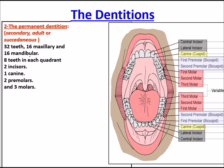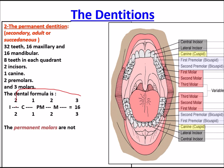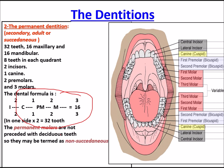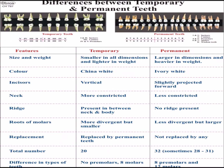Permanent or adult dentition contains 32 teeth — 16 maxillary and 16 mandibular — with the formula 2-1-2-3. Permanent molars are not preceded by any deciduous teeth, so they are termed non-succedaneous teeth. Differences between temporary and permanent teeth: temporary teeth are smaller in dimension and lighter in weight; temporary teeth are china white while permanent teeth are ivory white; central incisors are vertical in temporary but slightly projected forward in permanent teeth.